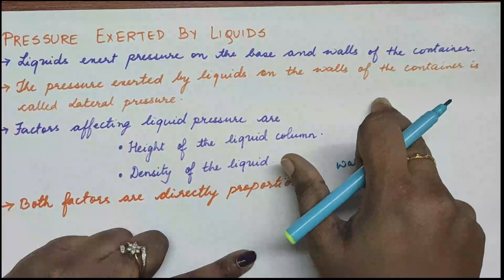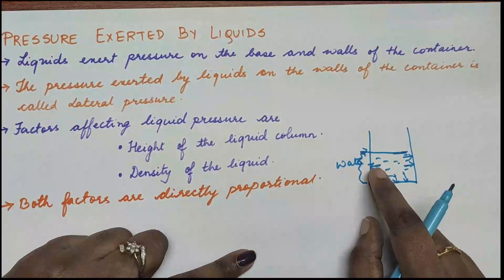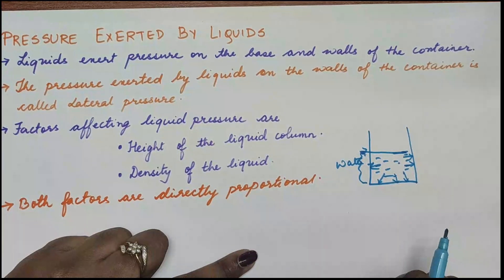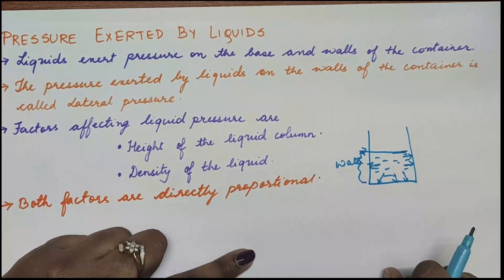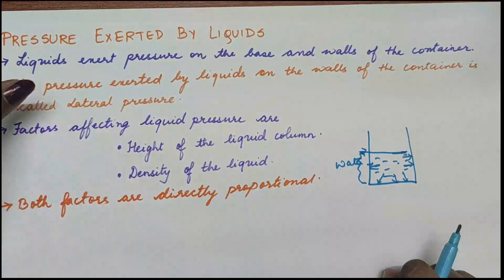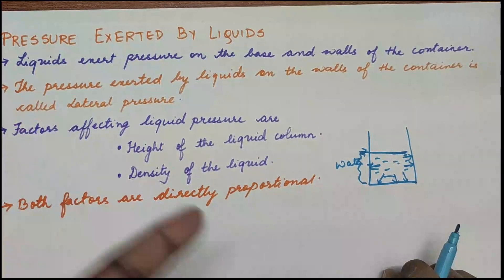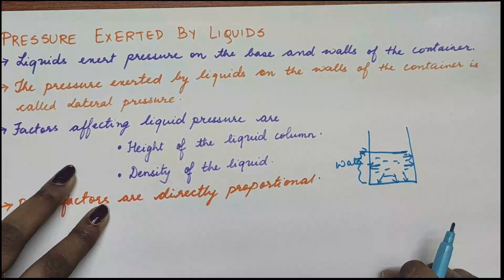The pressure exerted by a liquid on the walls of the container is called lateral pressure. So the pressure which the liquid is exerting on all the sides or walls of the container is called lateral pressure. To understand this more, you can do different experiments like the one I am going to show you.